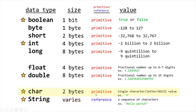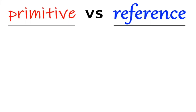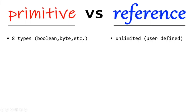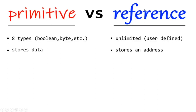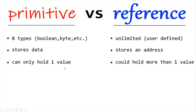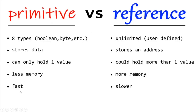Let's distinguish the difference between primitive and reference data types. There are eight primitive data types: boolean, byte, short, integer, long, float, double, and char. Reference data types, like strings, have an unlimited amount because they are user-defined. Primitives store data; reference data types store an address. Primitives can only hold one value; reference data types can hold more than one. Primitives use less memory and are faster compared to reference data types, which use more memory and are slower.